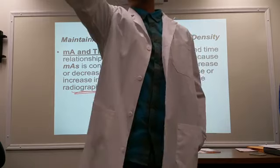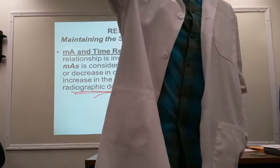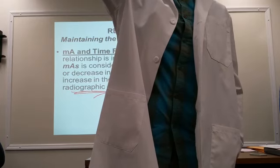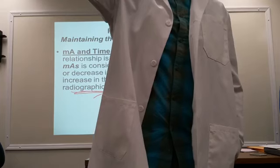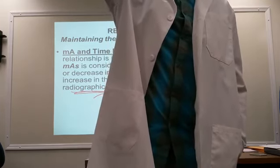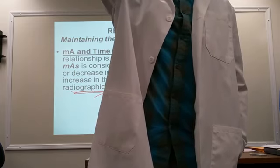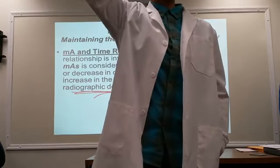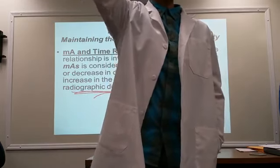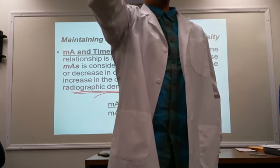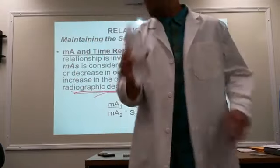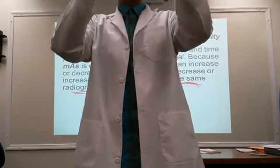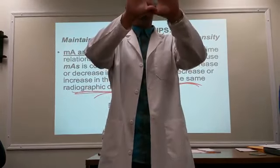What I did change was my exposure time — either really fast or really slow, it's still 17 fluid ounces. This is what we can do with manipulating MA and time. Because they are considered as one unit, we can manipulate one or the other to keep the same total mAs.